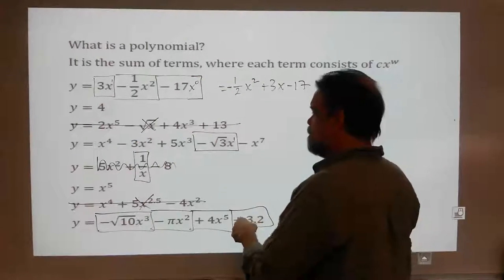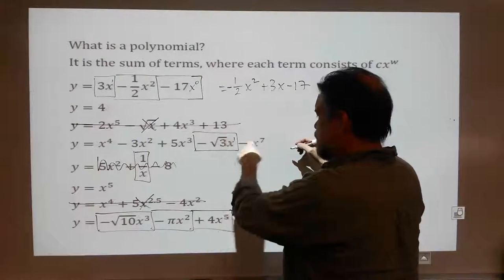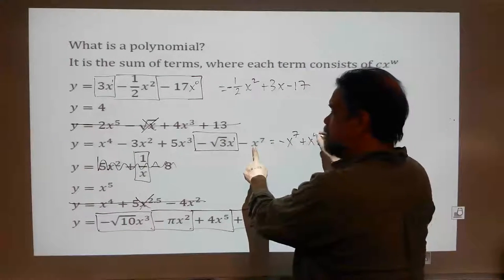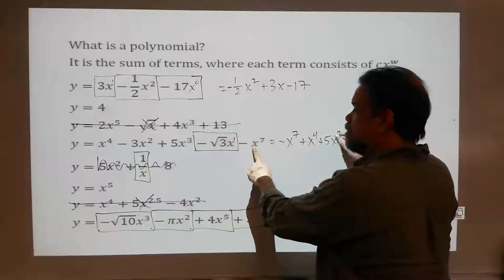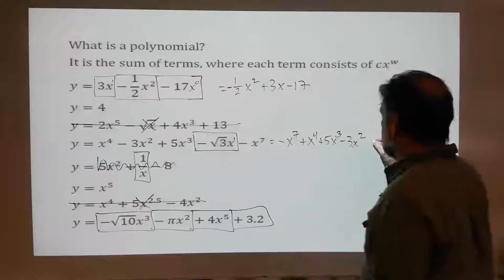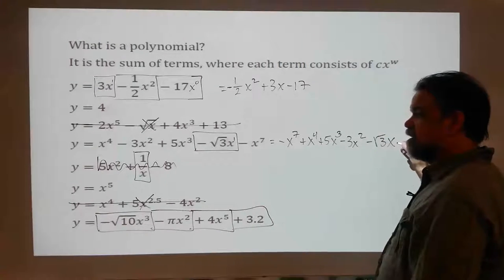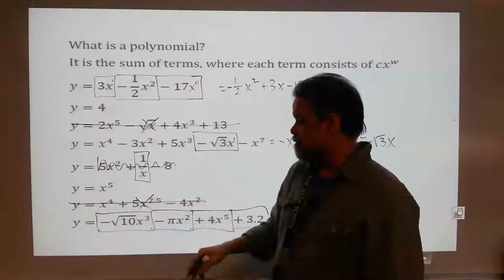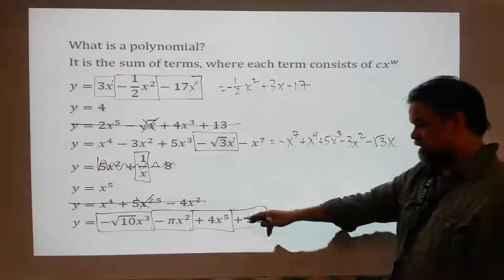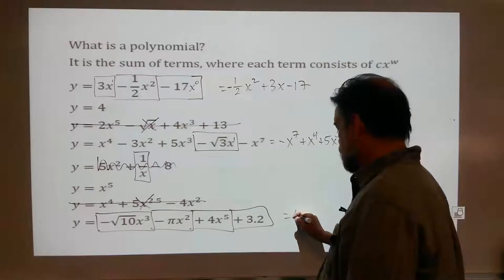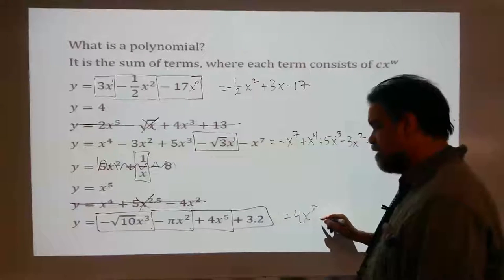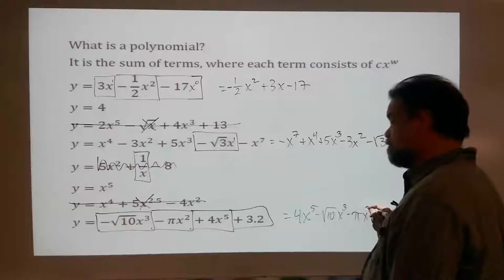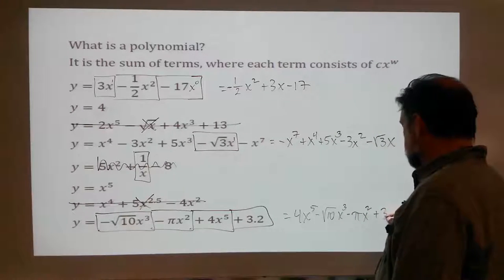Which, if you remember when you're studying quadratic functions, that's standard form of a quadratic function — your x squared term, then your x term, then your constant. This monomial is automatically written in standard form. This one here: what's my biggest exponent? That's my biggest. So this is negative x to the 7th plus x to the 4th plus 5x cubed minus 3x squared minus square root of 3 times x. And this last one would be 4x to the 5th minus square root of 10 times x cubed minus pi times x squared plus 3.2.